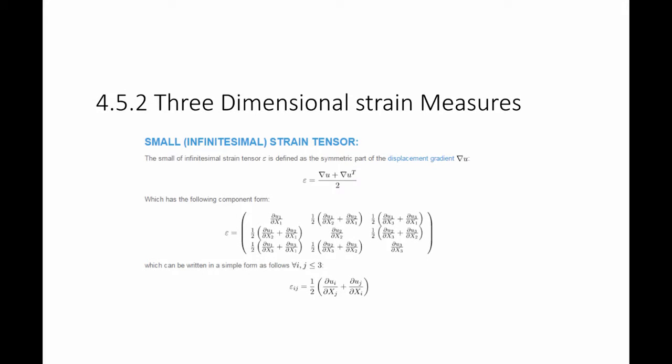The first measure of strain is called the small or infinitesimal strain tensor. It is defined as follows: it's equal to the gradient of u plus its transpose divided by 2. The diagonal components are ∂u₁/∂x₁, ∂u₂/∂x₂, ∂u₃/∂x₃, and there are off-diagonal components as well. In compact form, ε_ij is equal to half of (∂u_i/∂x_j + ∂u_j/∂x_i).